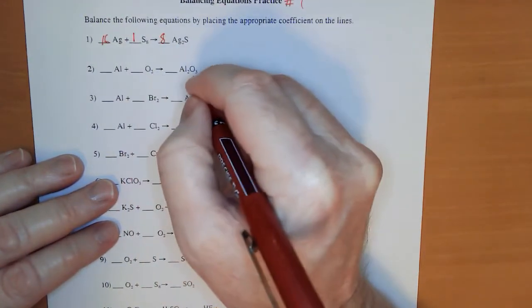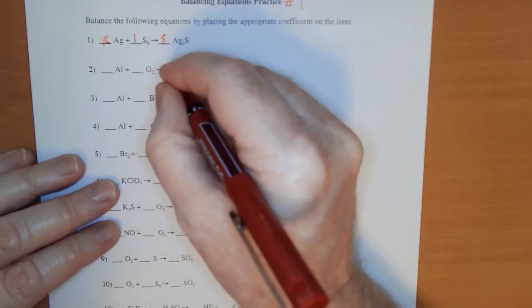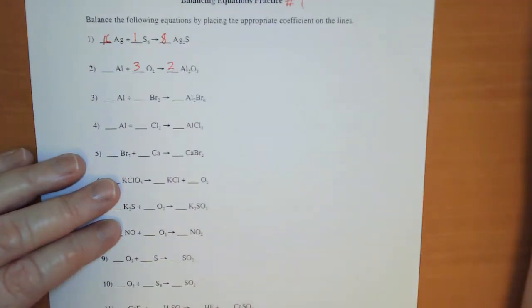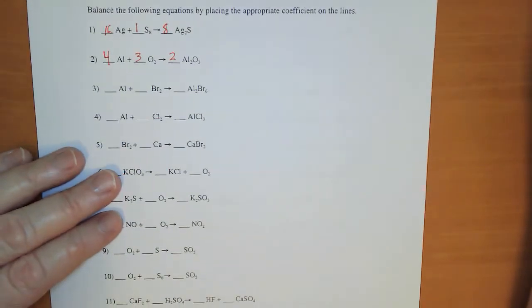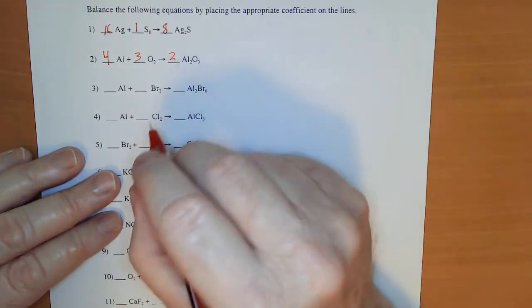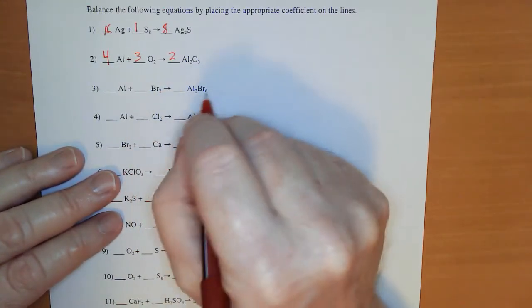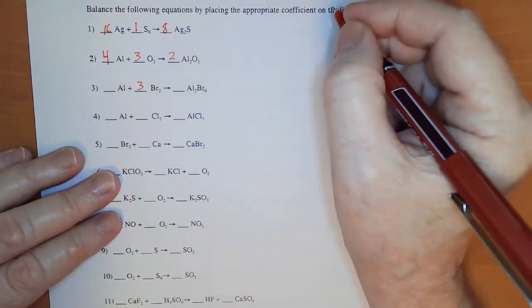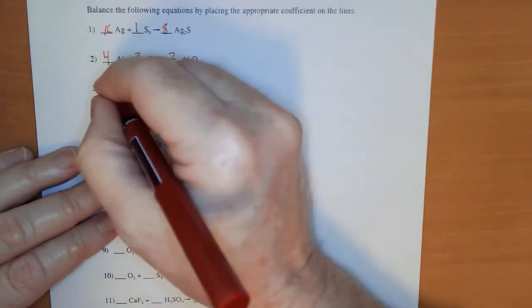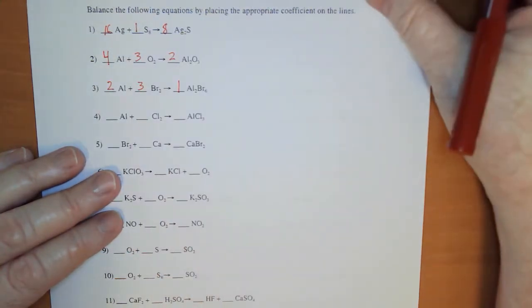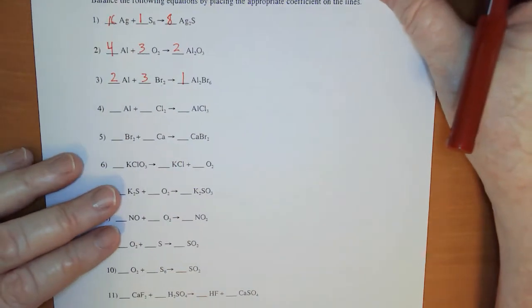I see a 2 and I see a 3 — those are different, so I'm going to have to put a 2 here and a 3 there. That gives us the same number on each side and a 4 on the aluminum. I happen to see a 2 on the bromine and a 6, so if I put a 3 here, that's good. If I put a 1 there and a 2 there, that's balanced.